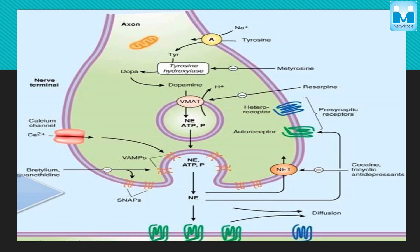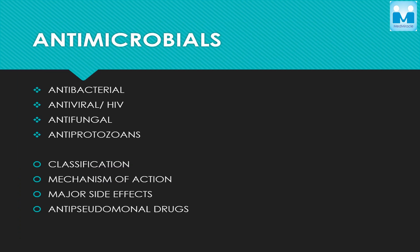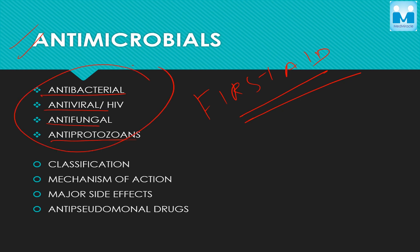This is what I was talking about — the pathways showing the inhibitors and their sites of action. For the antimicrobial section, I recommend First Aid — in just three or four pages, the topics are beautifully covered: antimicrobial, antiviral, antifungal, antiprotozoals. You have to know classification, mechanism of action, and major side effects, as a lot of questions come from this. Also, anti-pseudomonal drugs are something you have to memorize thoroughly.